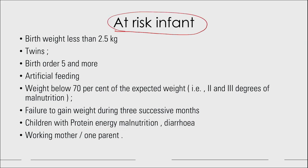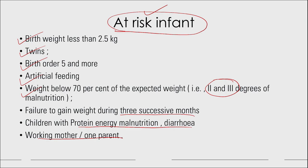At-risk infants include those with birth weight less than 2.5 kg, twins, birth order of 5 or more, on artificial feeding, weight below 70% of expected (second and third degree malnutrition), failure to gain weight over 3 successive months, children with protein-energy malnutrition and diarrhea, and those with a working mother or single parent.